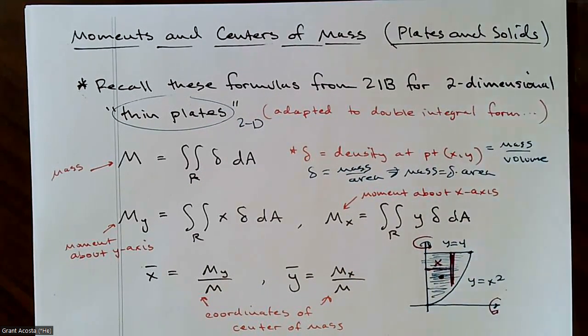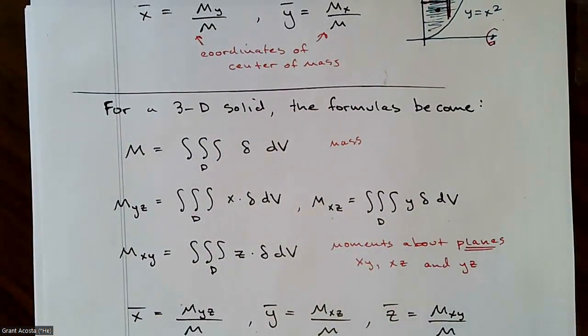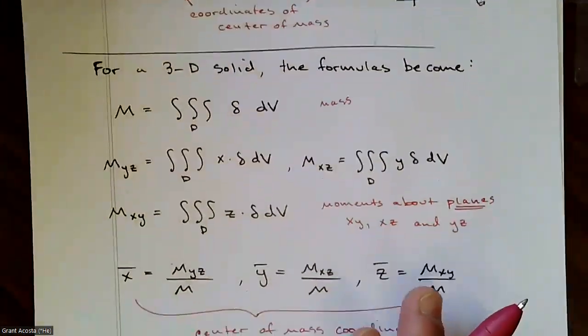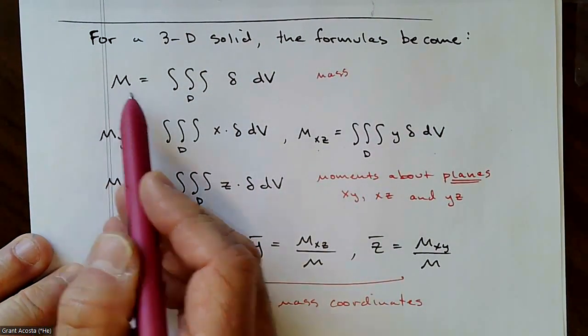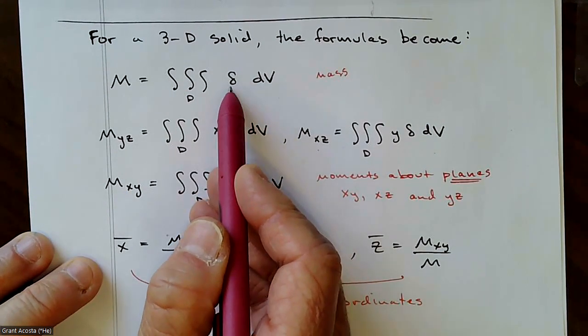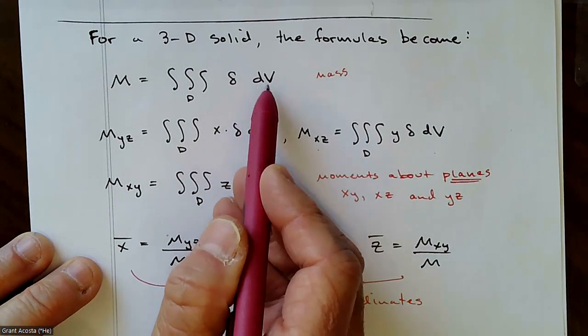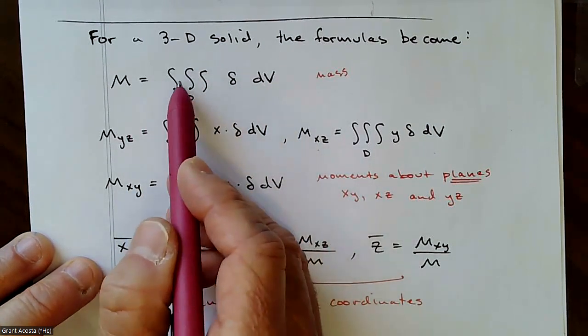So now we extend these ideas to a three-dimensional solid. And the formula is very similar. So the mass of a three-dimensional solid, we're going to need to, for every point, multiply the density times the little small unit of volume. Density times volume gives us mass and we integrate over the whole region.